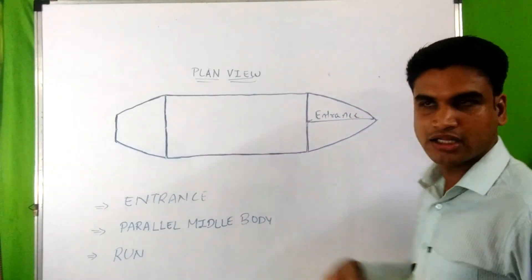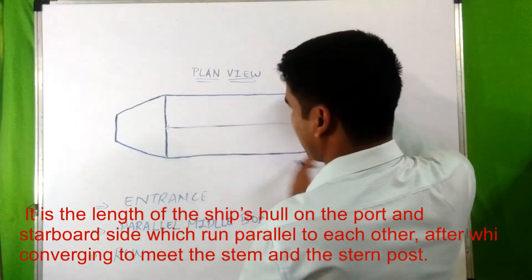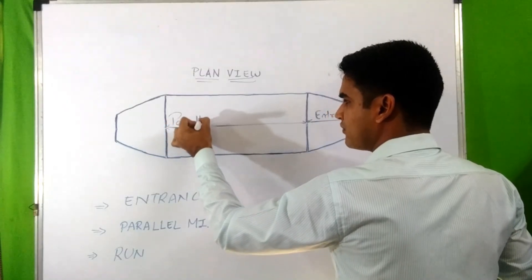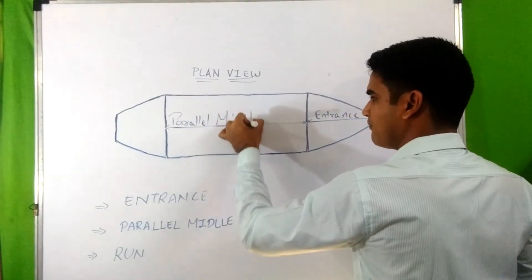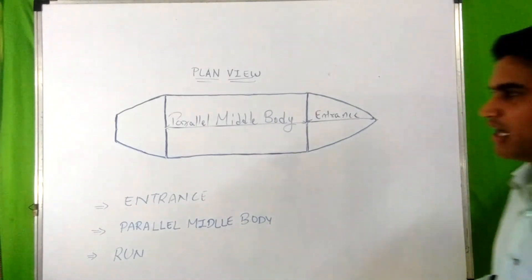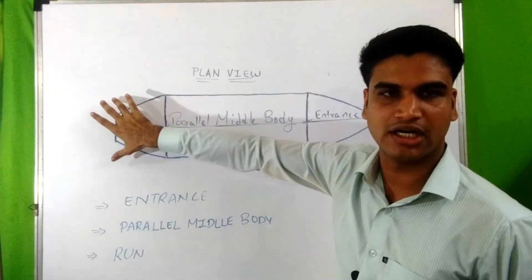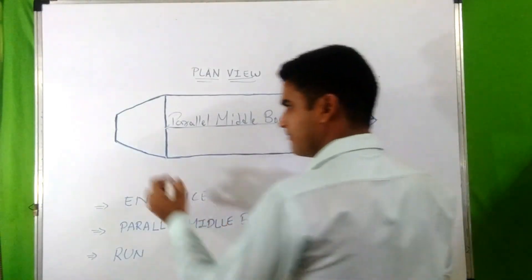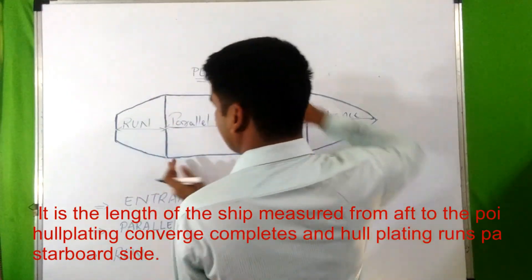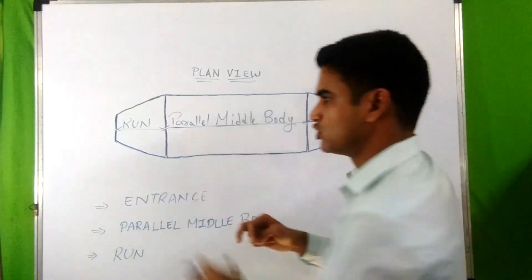Next is parallel middle body. Parallel middle body is the length from where the hull plating starts going parallel till the other end — from this end to this end the hull plating is going parallel. Next is run. Run is measured at the aft end from where the parallel middle body stops and the converging starts, till the extreme aft end.